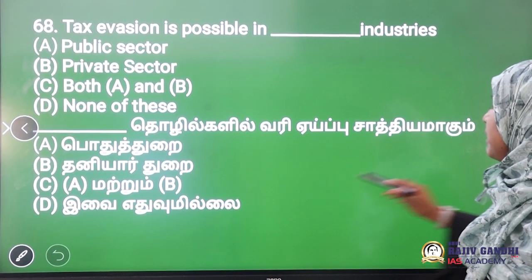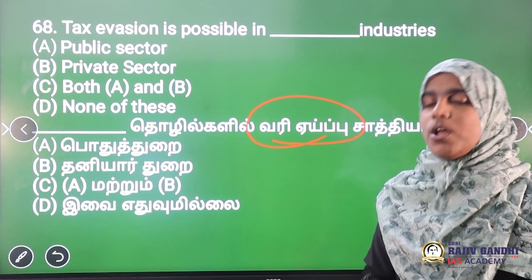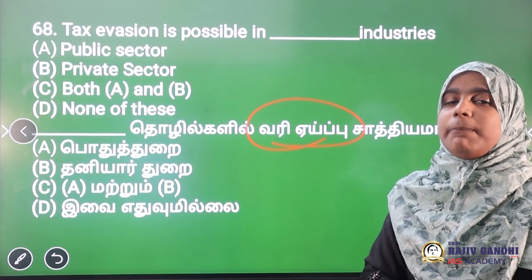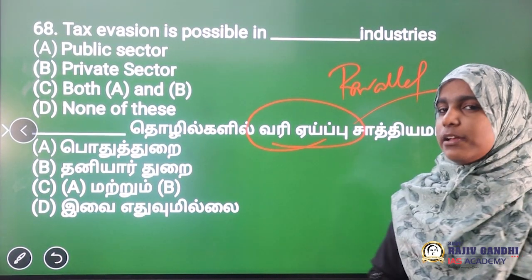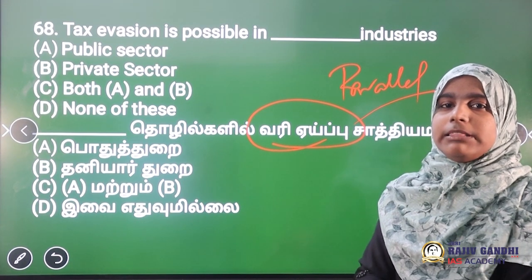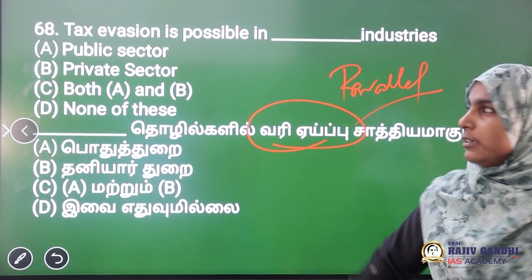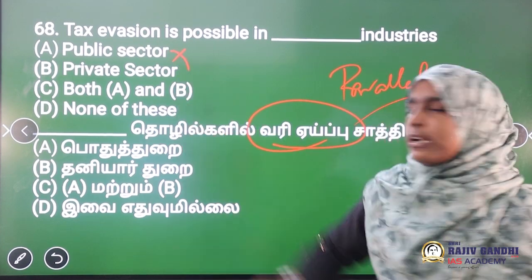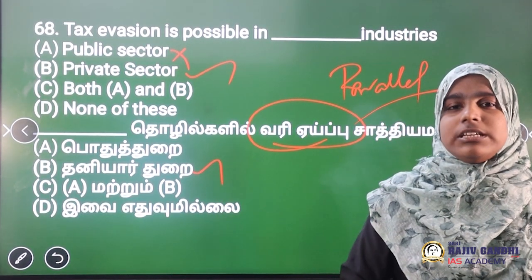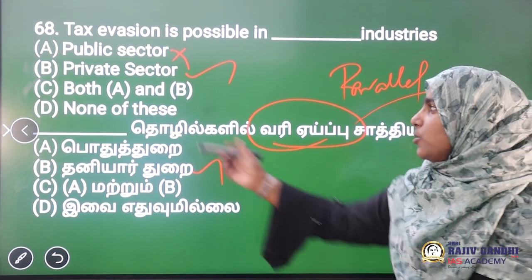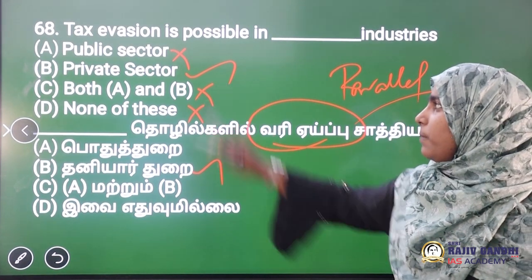Tax evasion is possible in which sector? The key concept here is that when people avoid paying taxes to the government, it creates a parallel economy. Tax evasion is possible in both the public sector and the private sector. Option A (public only) and option C (foreign) and option D are wrong. The correct answer is both — option B, covering both public and private sectors.